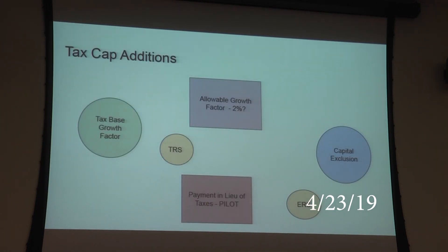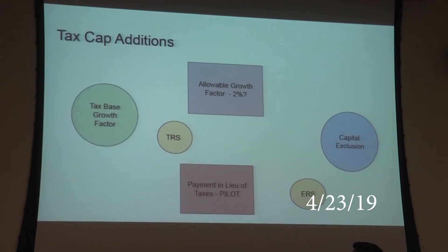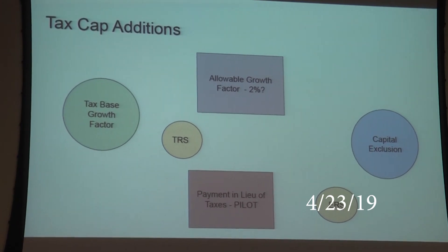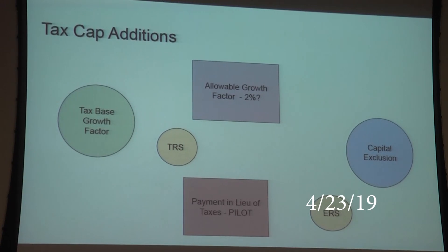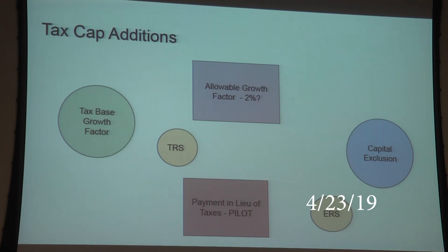In the purple box is the allowable growth factor — the 2%. That's really what people are talking about: it's either 2% or the greater of 2% and the consumer price index, set every year. That's where people fixate on the 2%. But there are other things that actually help and add to the tax cap.